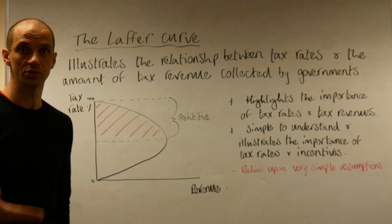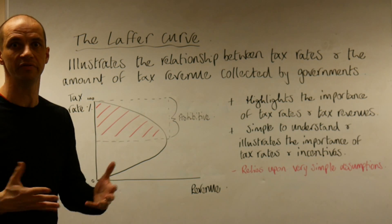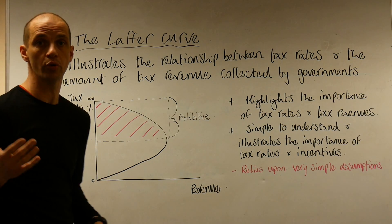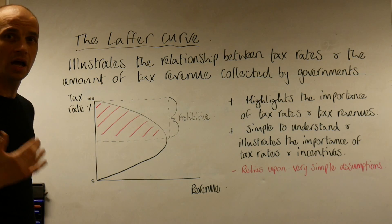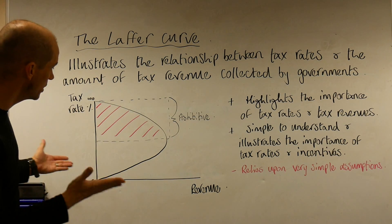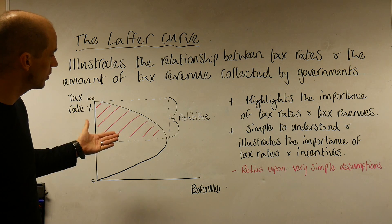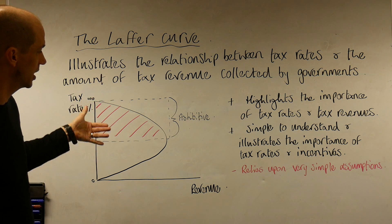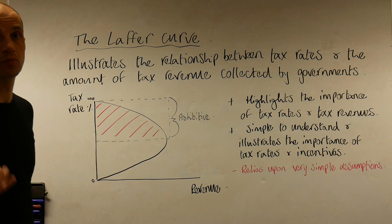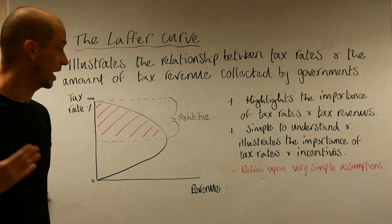Art Laffer was a supply-side, classical type of economist, so he was very free-market orientated and didn't really like big government. We can see his principle in action here — really what he's suggesting is that there is a real opportunity to reduce taxes to encourage economic output.